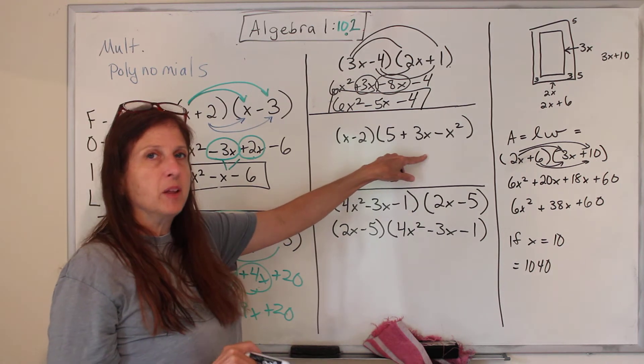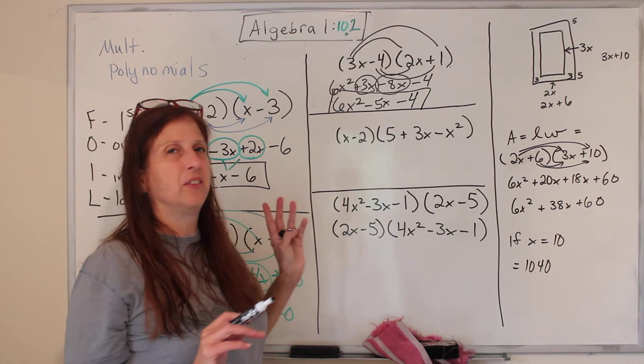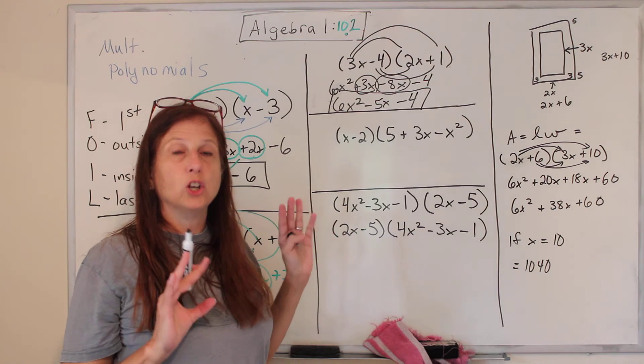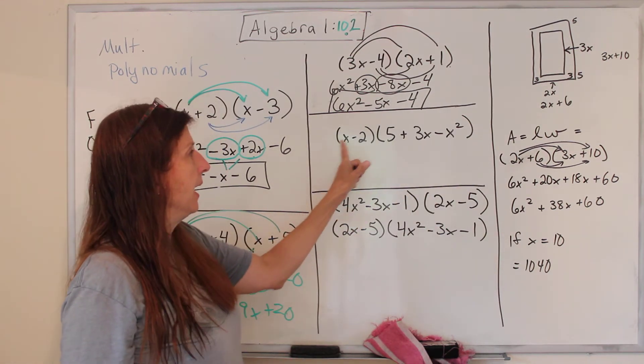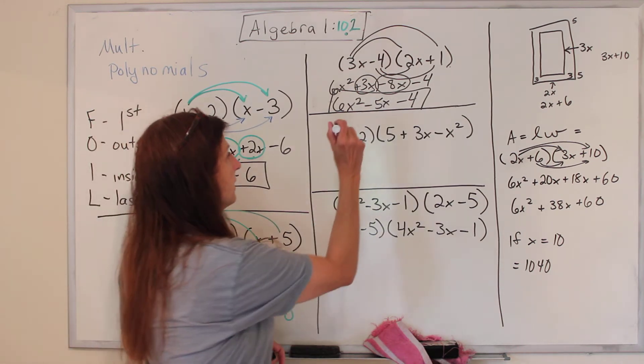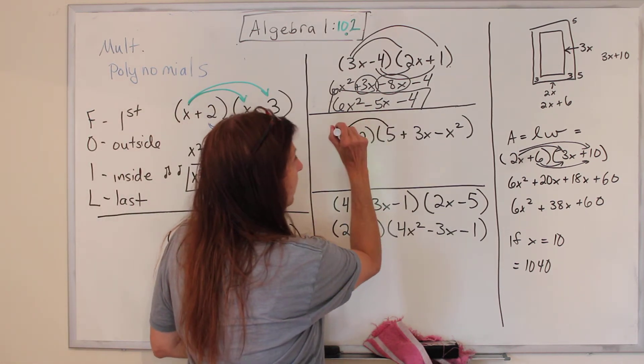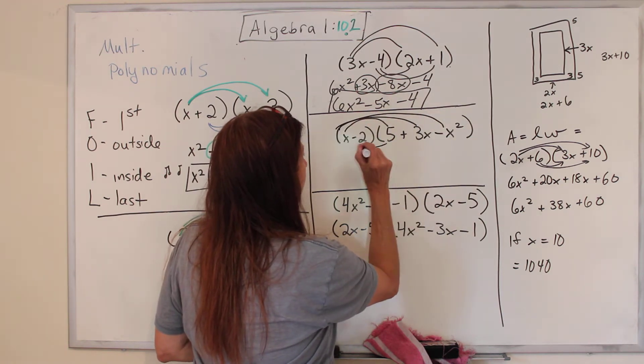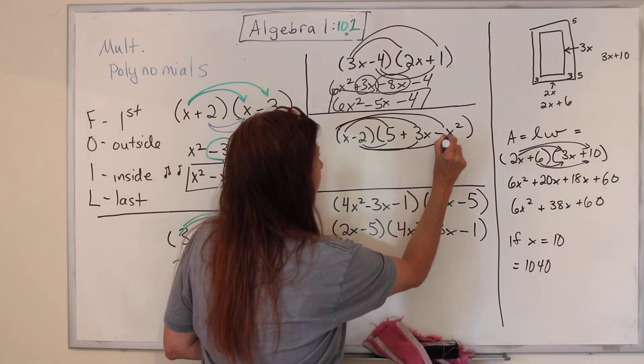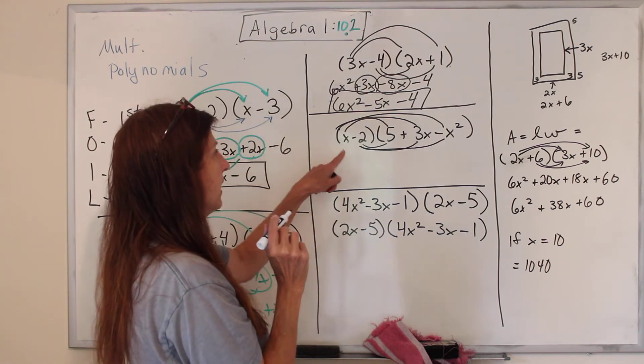Now, what about this one? Your book shows you how to do this vertically. No. We're just going to do the distributive property and draw our arrows, and we're going to be fine. So our arrows go here, here, and here, and there, there, and there. All right. So now let's do it.